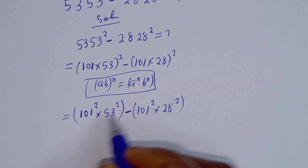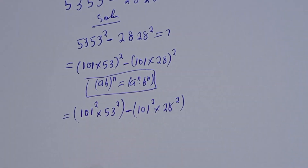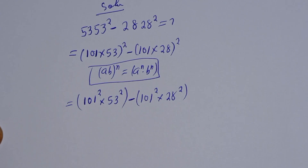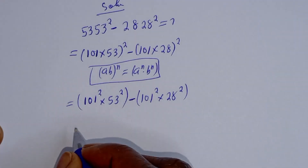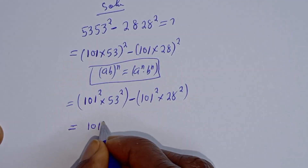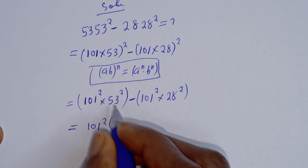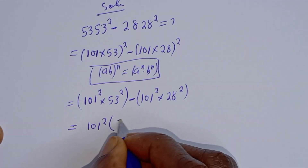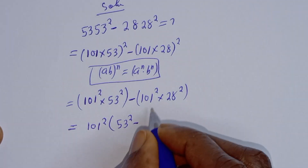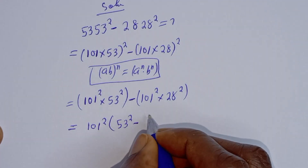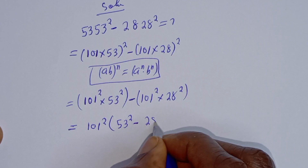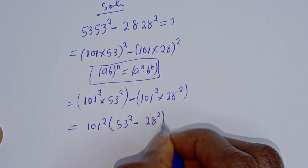If you look at this, 101 squared is common — let's bring it out. This equals 101 squared, bracket: 50 squared minus 28 squared.